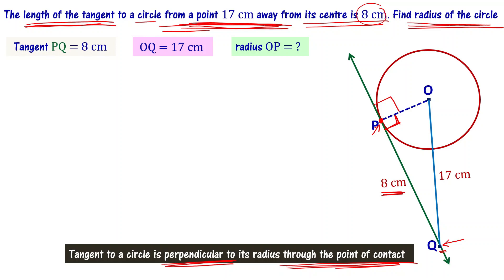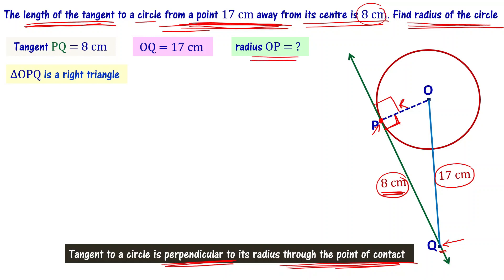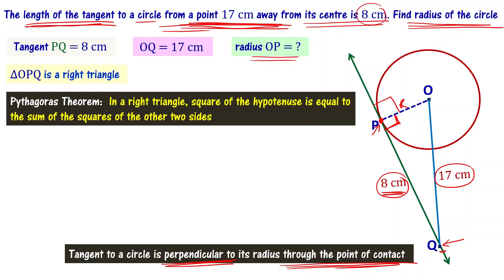We can say that triangle OPQ is a right-angle triangle. We know two sides: 8 centimeters and 17 centimeters. The third side is the radius, which we have to find. By the Pythagorean theorem, the square of the hypotenuse is equal to the sum of the squares of the other two sides.